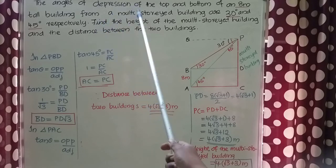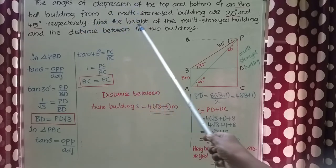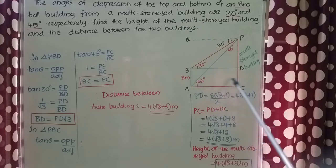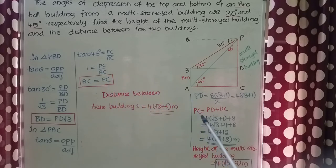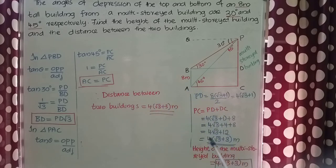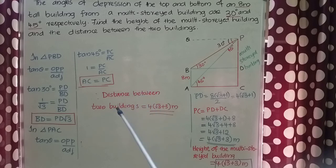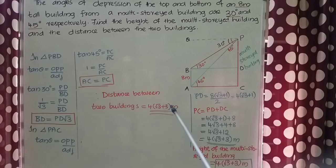There is one more part to the question: the distance between the two buildings. From the figure, the distance between the two buildings is AC. We proved that AC = PC, and PC = 4(√3 + 3) meters. Therefore, the distance between the two buildings is also 4(√3 + 3) meters.